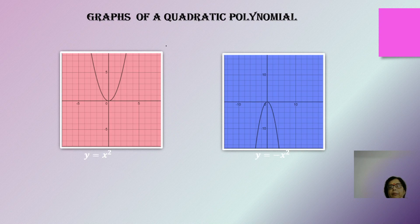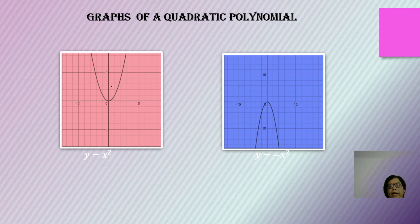Moving on, we take a quadratic polynomial. In the case of a quadratic polynomial, the graph line is always of a particular shape called the parabola. The point at the bottom is called the vertex of the parabola. The parabola is symmetrical about an axis. Here the simplest representation is y = x², where the parabola is symmetrical about the y-axis.